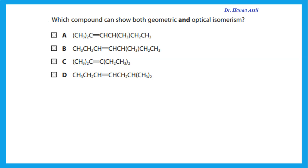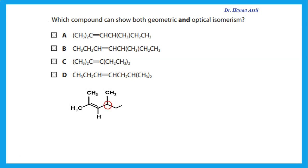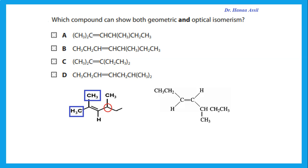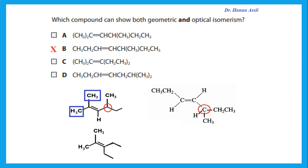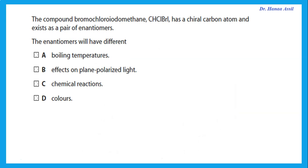Geometric isomers are the cis and trans forms when we have a double bond in which the carbons of the double bond are each bonded to two different groups. Optical isomers require a chiral center. For a compound to show both geometric and optical isomerism, it must have both. Compound B has a chiral center and both carbons of the double bond are each bonded to two different groups, so it shows both geometric and optical isomerism.